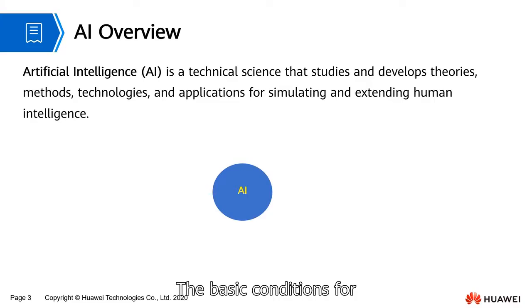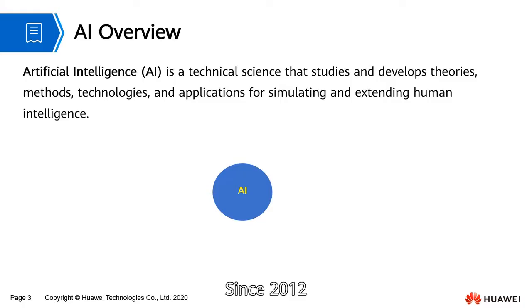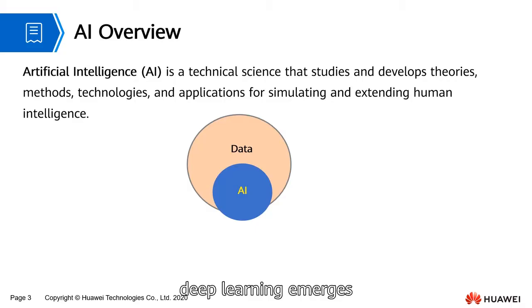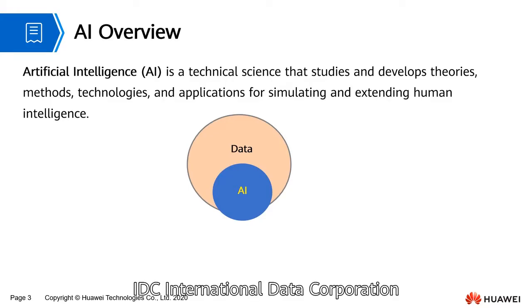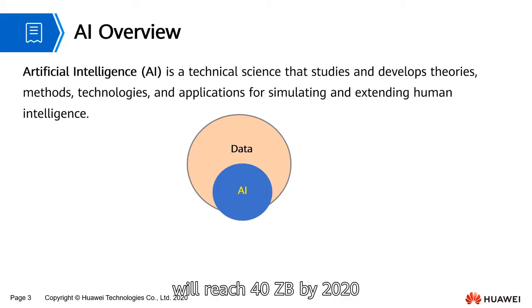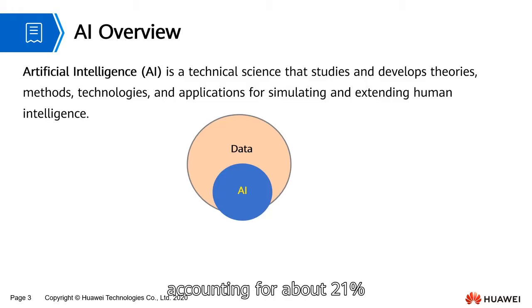The basic conditions for achieving AI include data, algorithms, and computing power. Since 2012, the data volume surges, deep learning emerges, and the computing power is improved — AI starts to burst. Explosive data volume growth provides sufficient nutrients for AI. IDC (International Data Corporation) predicts that the global data volume will reach 40 ZB by 2020, and the data volume in China will reach 8.6 ZB, accounting for about 21% of the global data volume.